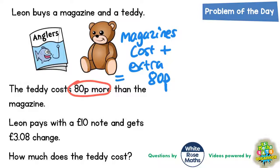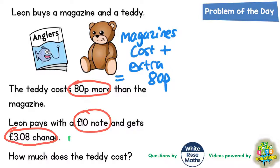Leon pays with a £10 note and gets £3.08 change. So what we can figure out first of all is what he actually paid. If he got £3.08 change, he must have paid £6.92.